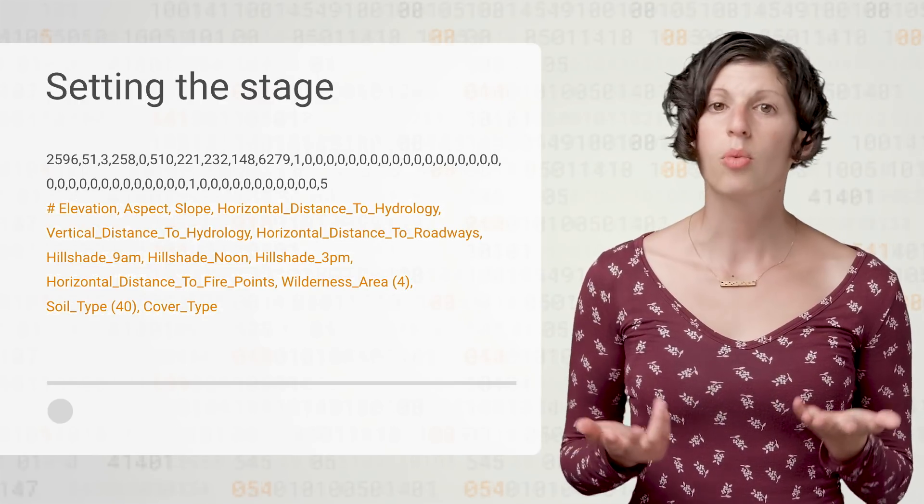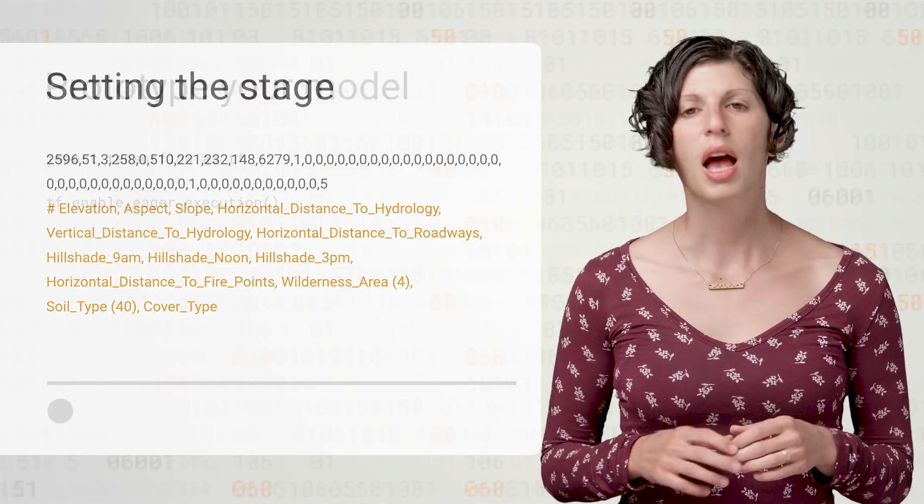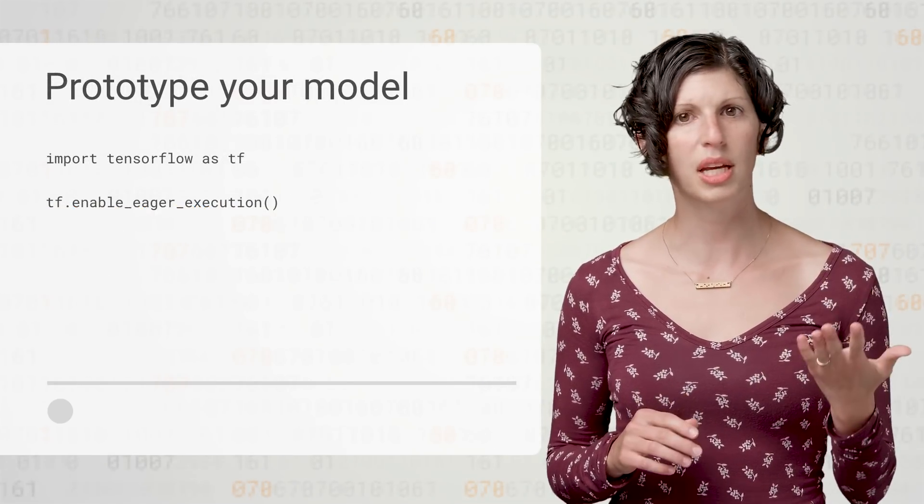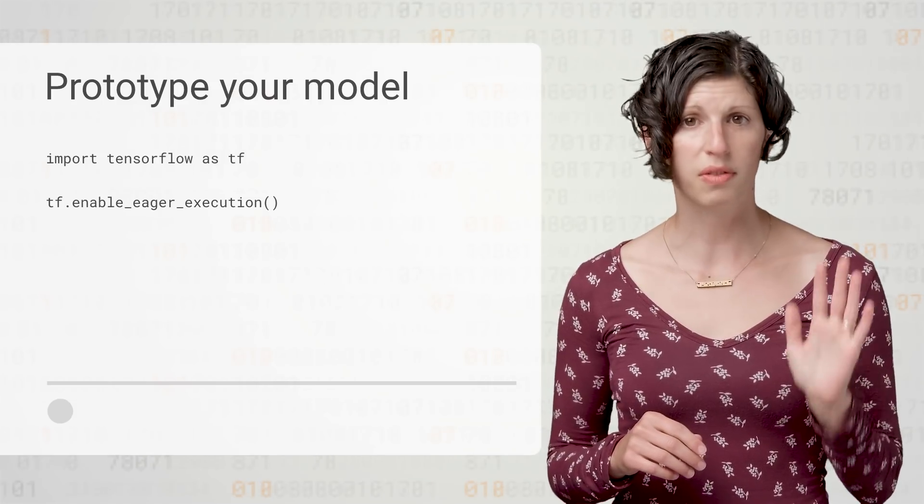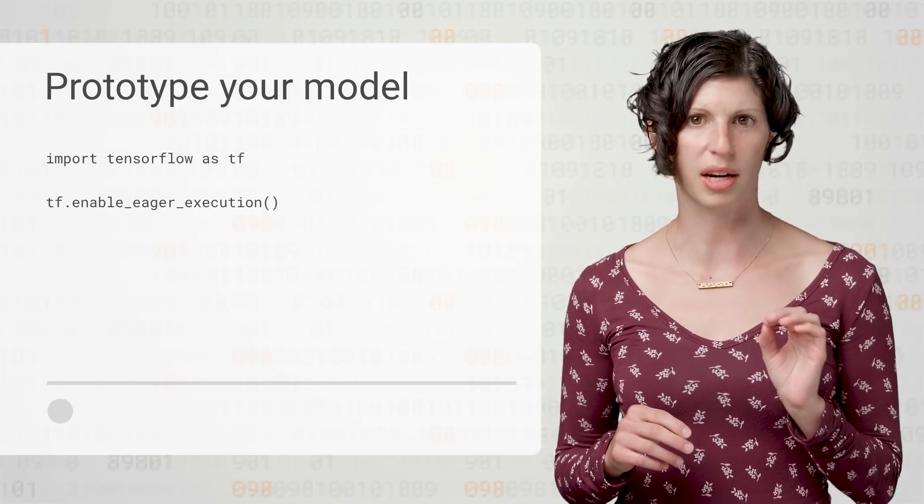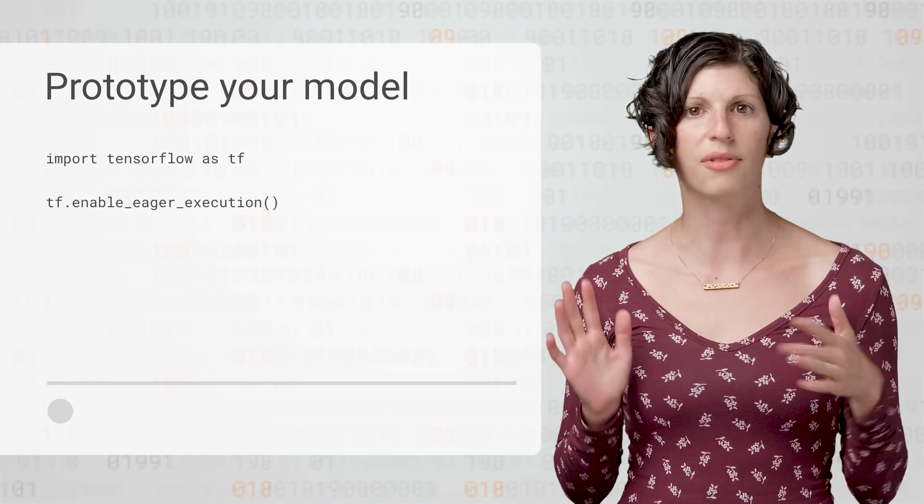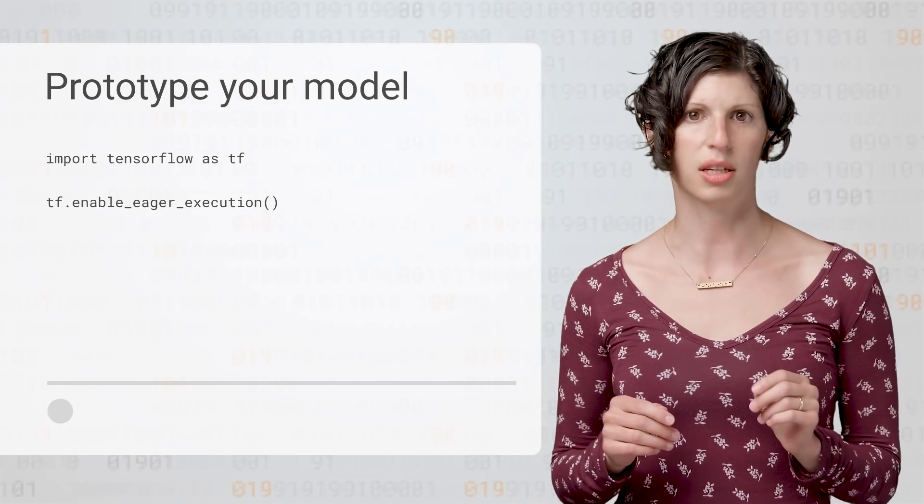Where do we start? What's the first thing we should do here? I'm going to suggest to you that when you're prototyping a new model in TensorFlow, the very first thing you should do is enable eager execution. It's simple. You just add a single line after importing TensorFlow, and you're good to go.